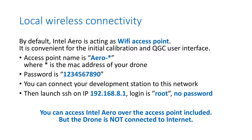Now let's talk about networking. If you are using Yocto, what is provided by default by Intel Aero is acting as a Wi-Fi access point, as a hotspot. So it's very easy to use — you don't need a third-party Wi-Fi router; you can use it anywhere. Look for a Wi-Fi network named 'Aero' followed by the MAC address of your drone, and the password is the 10 numbers shown on screen.